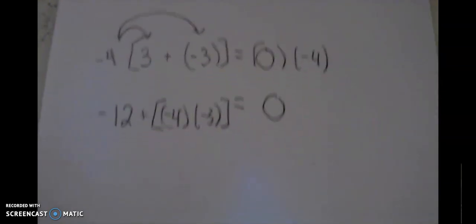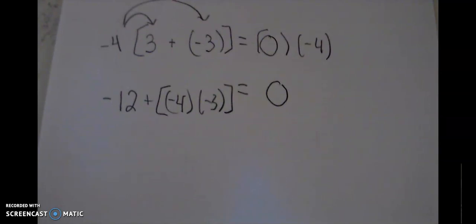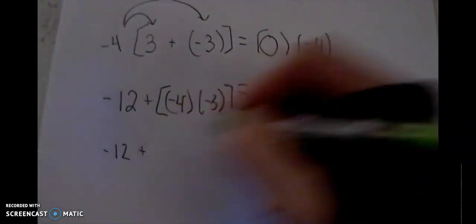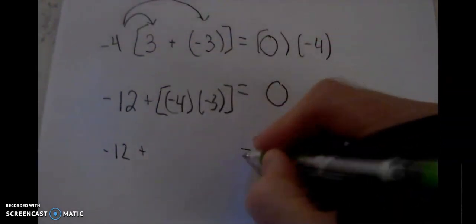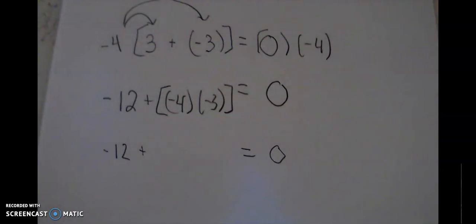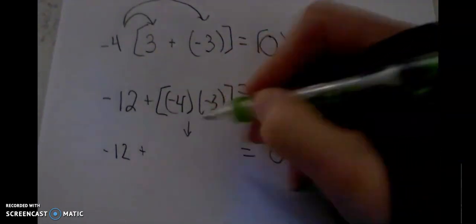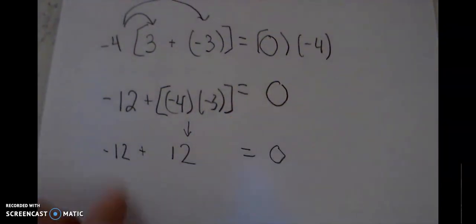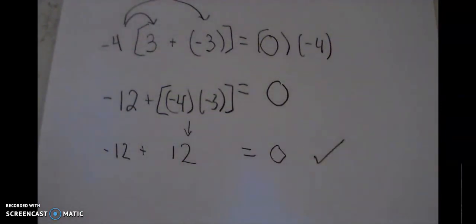Okay, and I have a negative times a negative. That's the question: is it positive or negative? Well, for this statement that we have, negative twelve plus the answer to this equals zero. Well, it must be true that this is going to be positive twelve. Why? Because negative twelve plus twelve equals zero makes it a true statement.